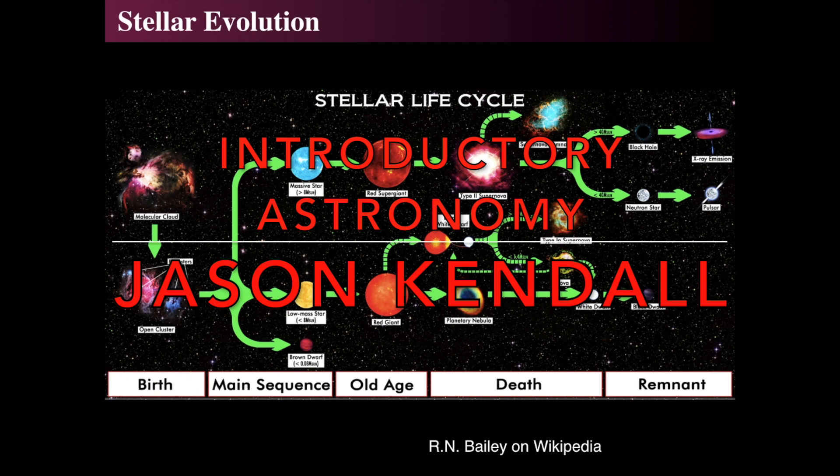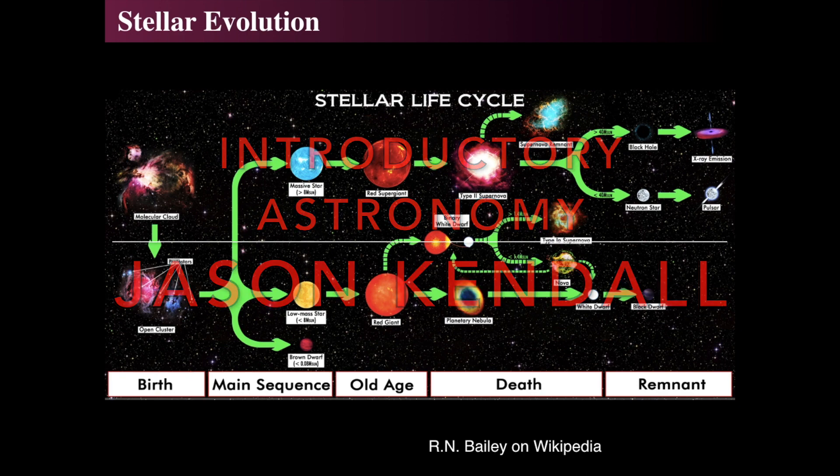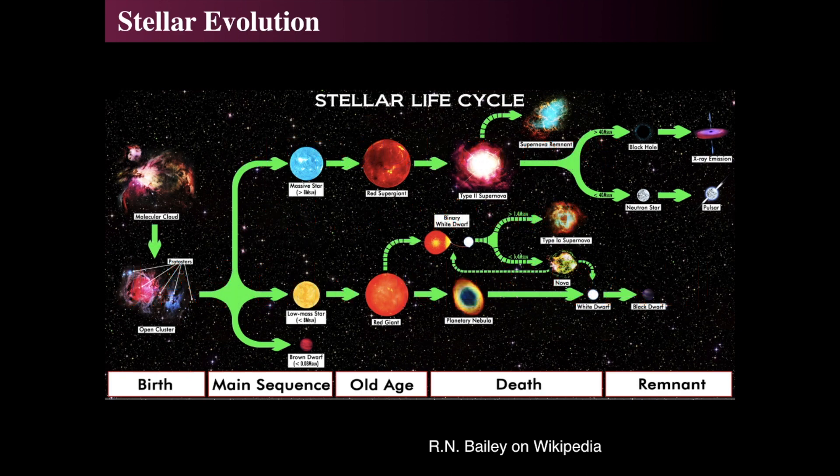Last time we were looking at the nature of how stars change with time and how they look in terms of their HR diagrams. We saw that star clusters had turnoff points and so forth. Now we're going to look individually at stars and see how they're born, how they live, and how they die, depending upon their masses and to some extent their composition.